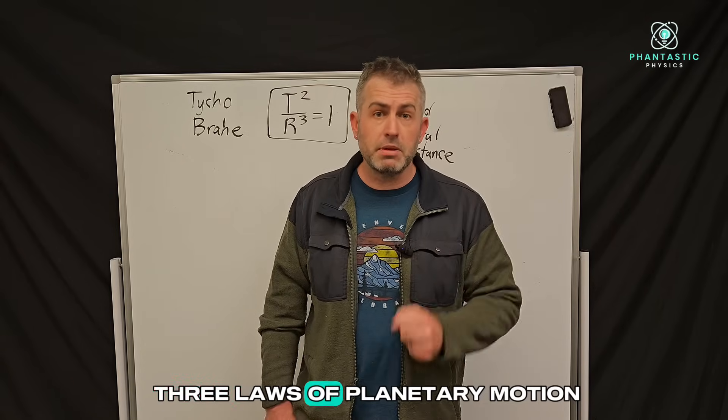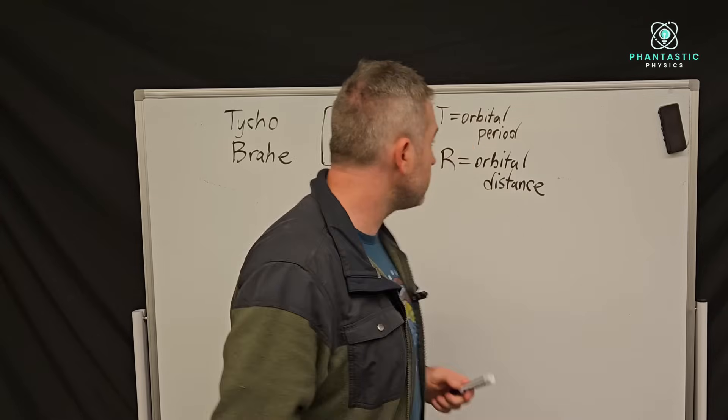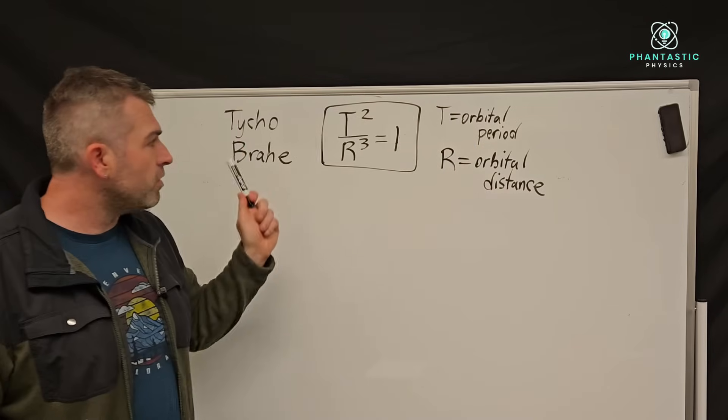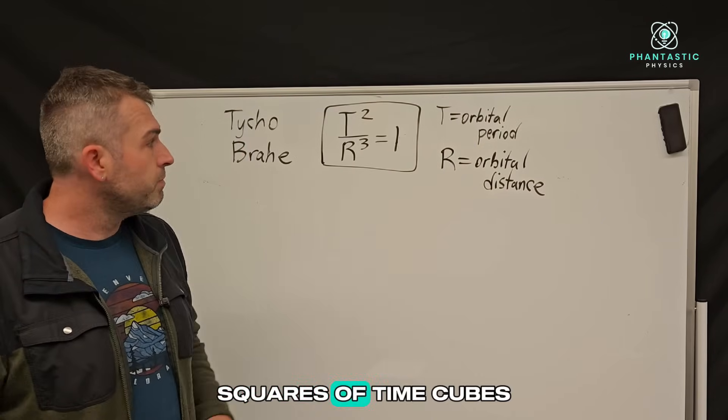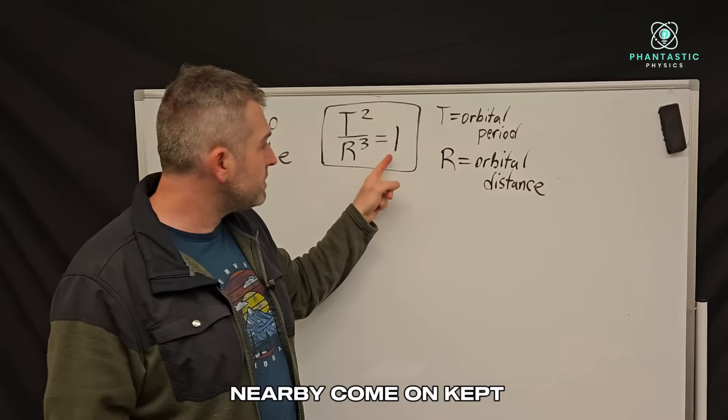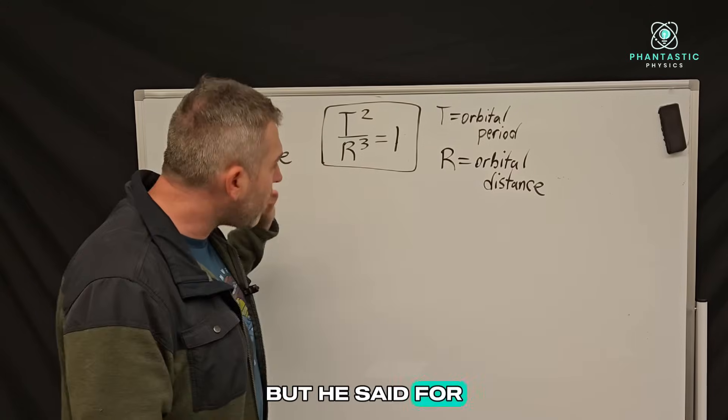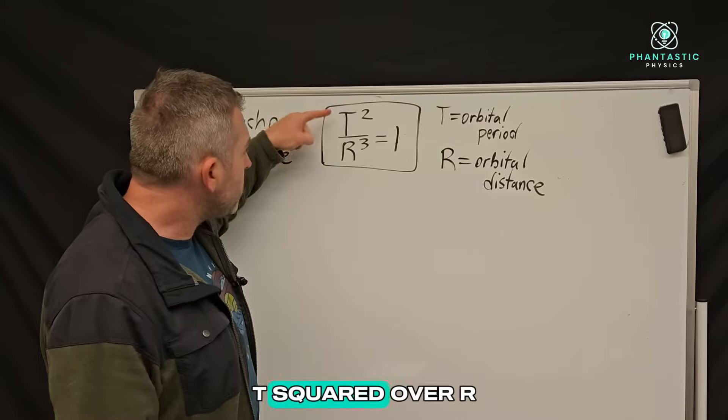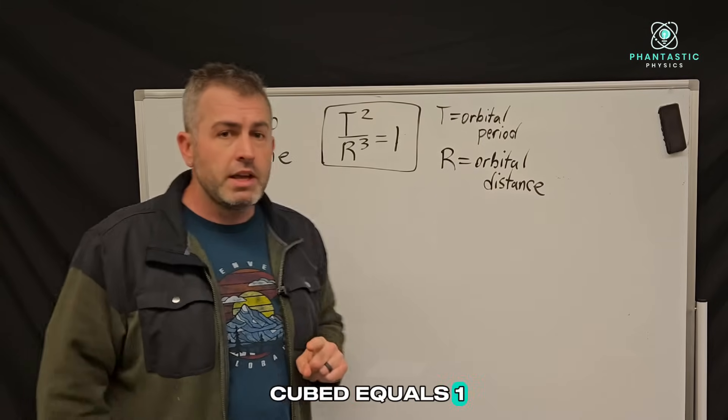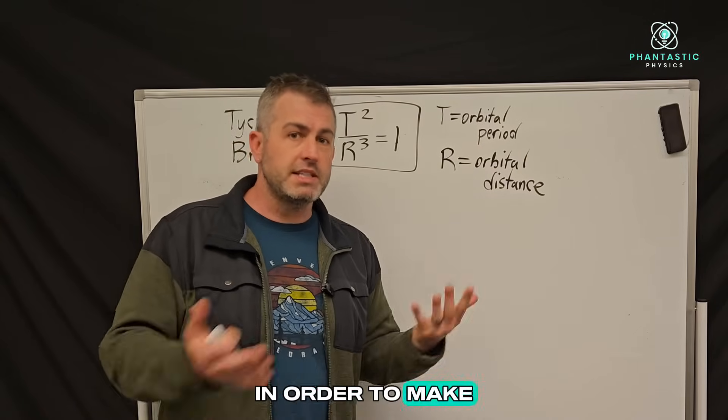Kepler developed three laws of planetary motion, and I'm going to focus on this third law today. It basically tells us T squared over R cubed equals one for our solar system. He did say in other solar systems, this one could be some other value, but for our solar system, T squared over R cubed equals one. So what is T and what is R? We need to understand that in order to make sense of this equation.